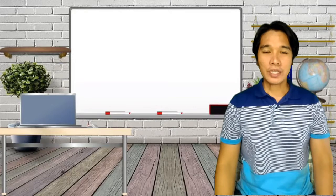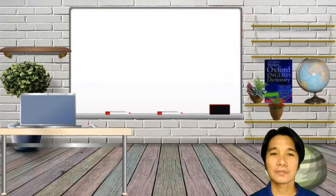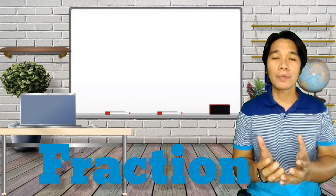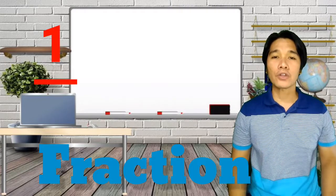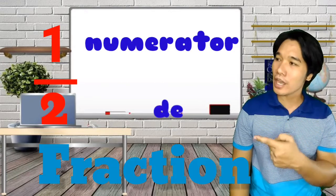But before we proceed, let us recall what is fraction and its part. Fraction simply tells us how many parts of a whole we have. And the top number on a fraction is what we call the numerator, and the bottom number is what we call the denominator.